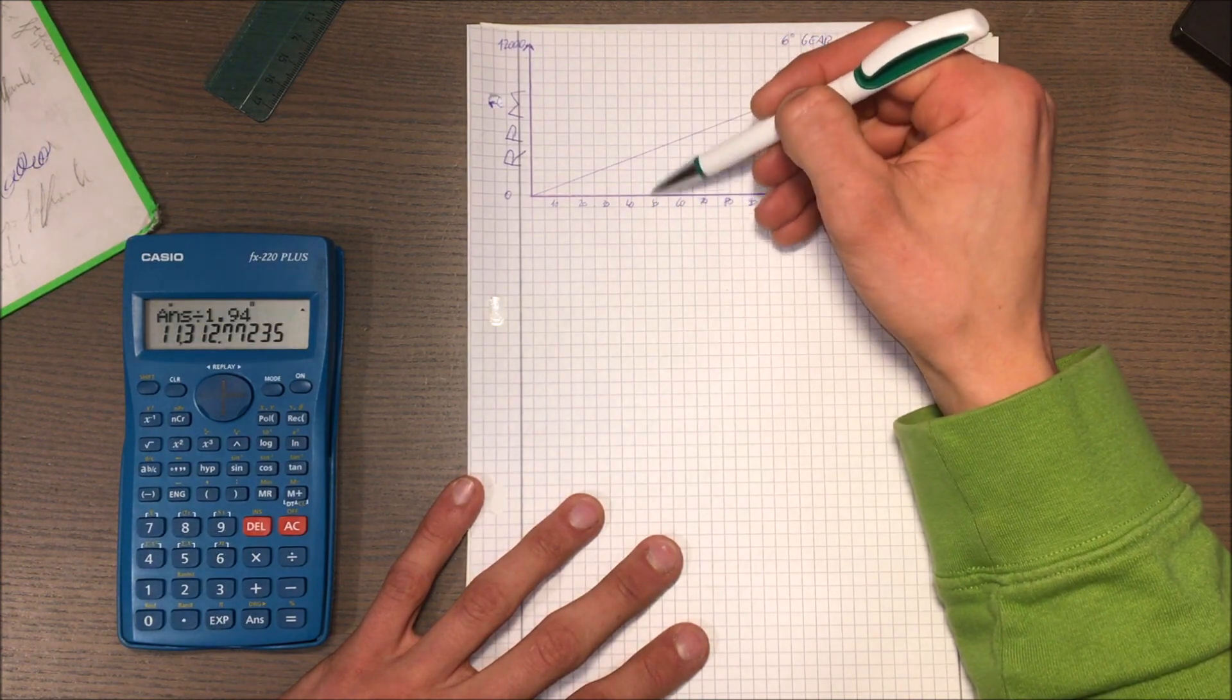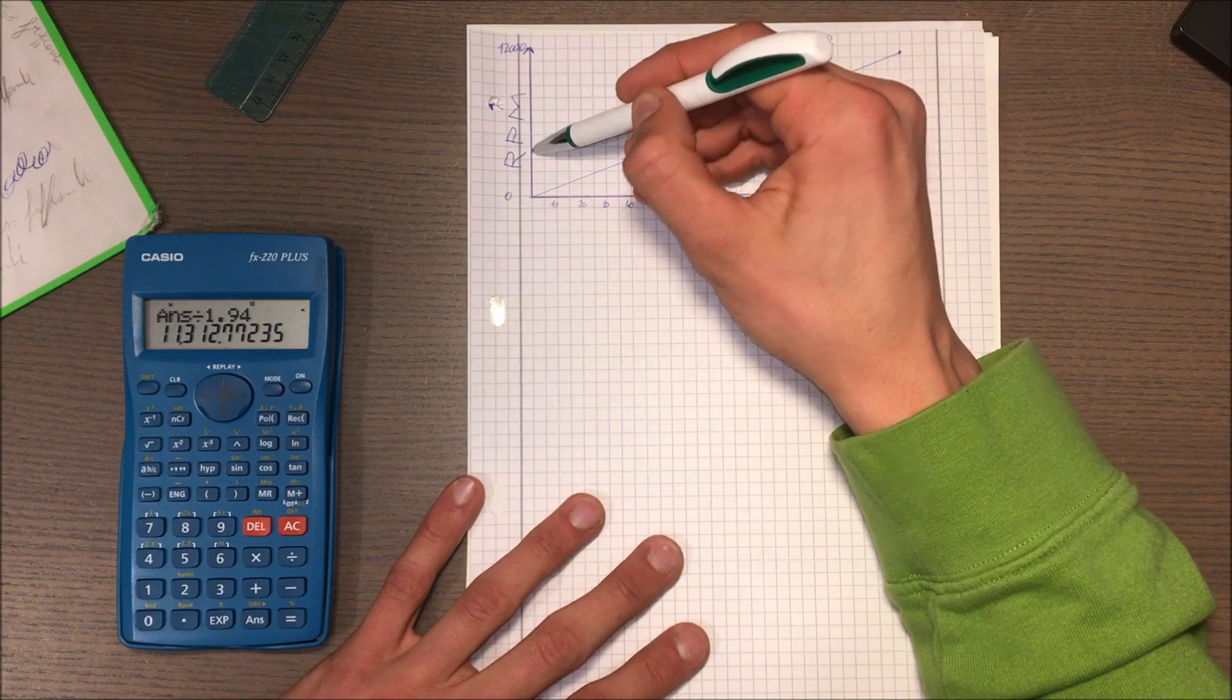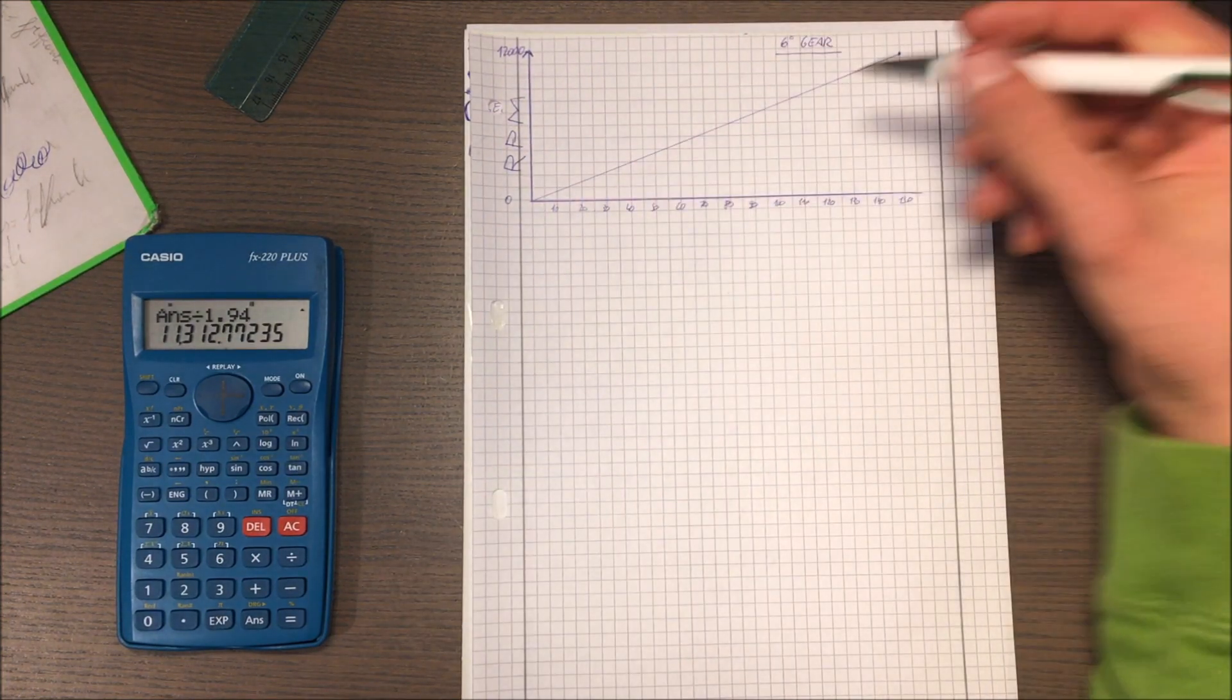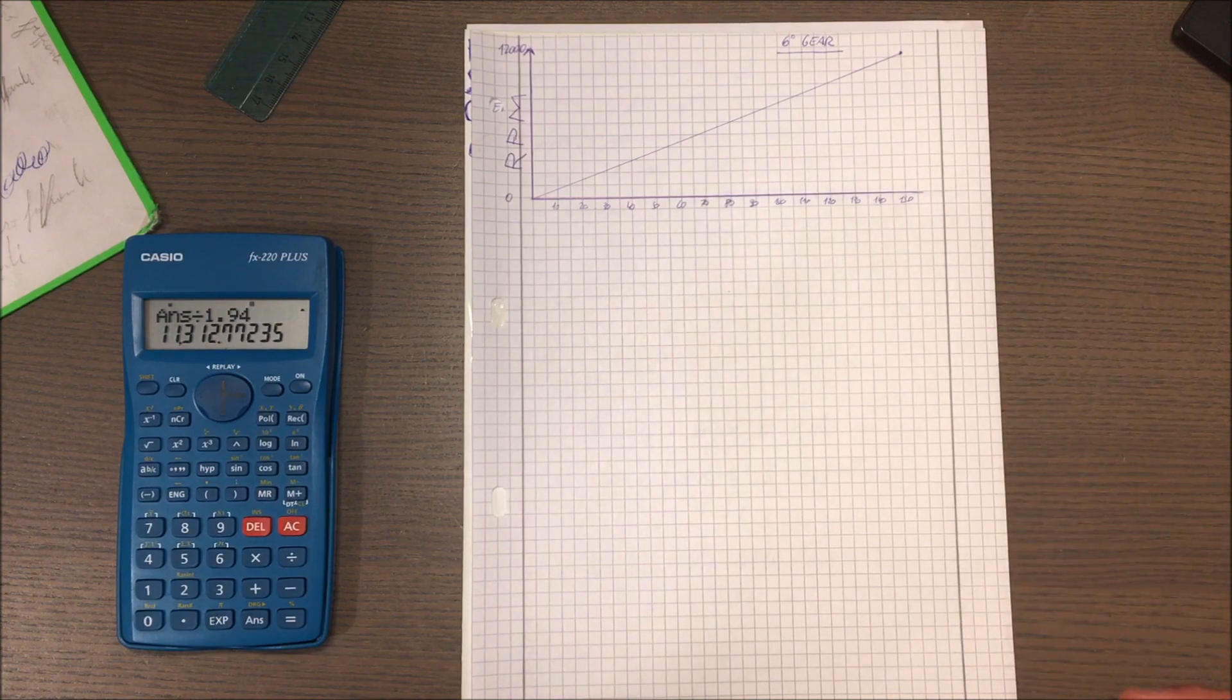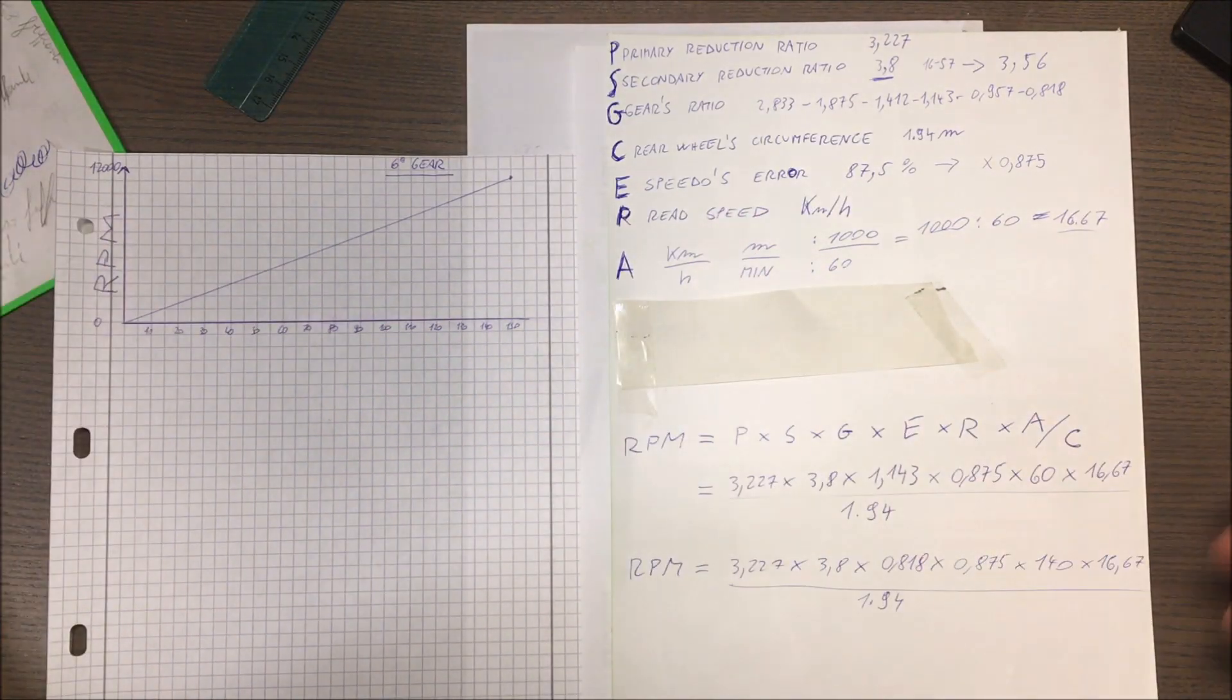I would be at a little bit less than 4,000 RPM. So in the same way I can do all the graphs for all the gears. So I hope the video will be helpful for you guys and see you next time.